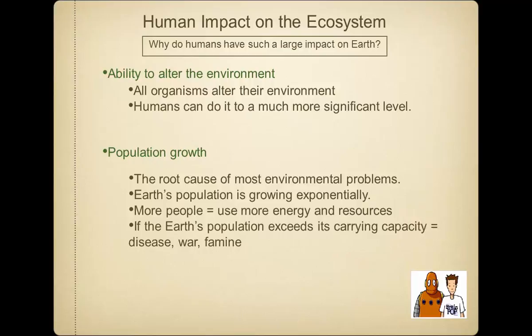Population growth is a major factor. There are 7 to 8 billion people on earth, and all those people require food, water, and shelter — plus things like cell phones and cars. Many environmental problems trace back to the earth's population. The population is continuing to increase drastically, and the more people we have, the more energy and resources we use. We could get to a point where the earth can't support that level of consumption.